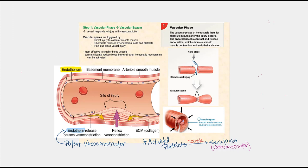The first step in hemostasis is the vascular phase, with the ultimate goal of causing vascular spasm. Vascular spasm is vasoconstriction at the area where the blood vessel has been injured. Vascular spasm is triggered by direct injury to the vascular smooth muscle — in other words, the tunica media — as well as chemicals released by the endothelial cells and the platelets, such as endothelin and serotonin.